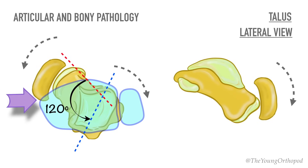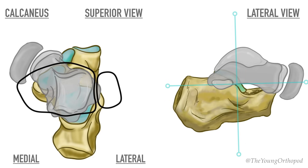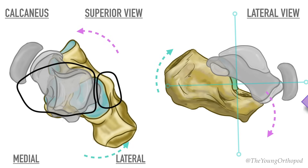The navicular abuts the medial malleolus. The medial angulation of the talar head and neck gives the subtalar joint a medial spin. With the interosseous ligament acting as a fulcrum, the anterior part of the calcaneus follows the deformed anterior part of the talus and shifts medially and downwards, whereas the posterior part of the calcaneus shifts laterally and upwards. The calcaneus abuts the fibular malleolus and the calcaneocuboid joint is displaced medially.